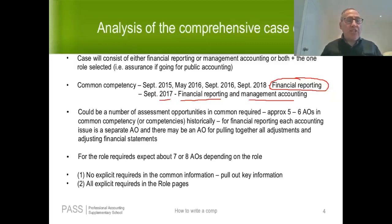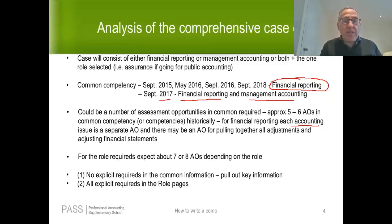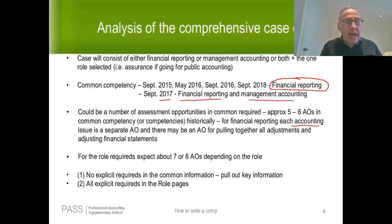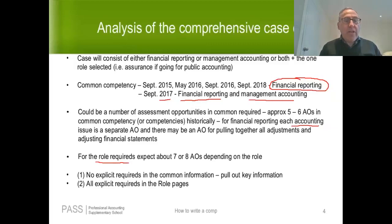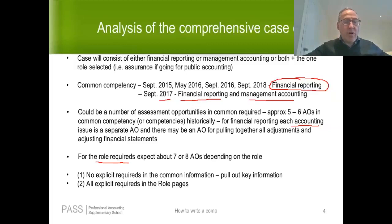Typically there are approximately five to six assessment opportunities (AOs) for the common competency. For financial reporting, each AO covers a separate accounting issue, and there may also be an AO for pulling all adjustments together. So if you leave out even one accounting issue, you will lose a complete AO. For the role-specific requirements, you can expect seven or eight AOs depending on your role, but most of the required you'll be dealing with will be role-related.